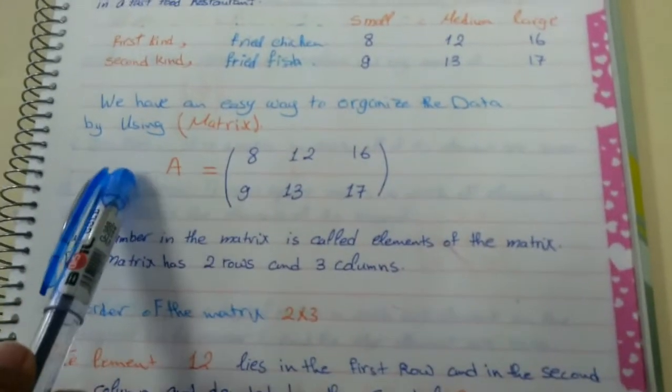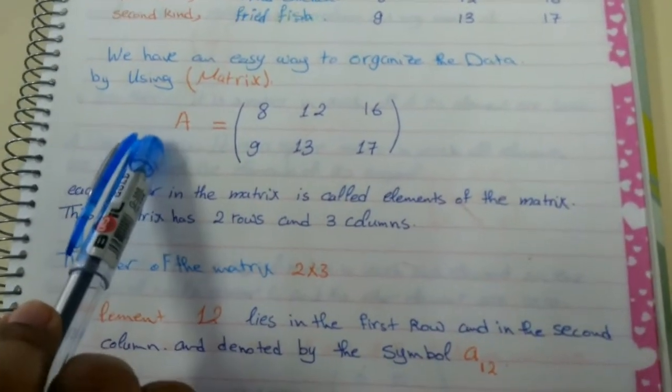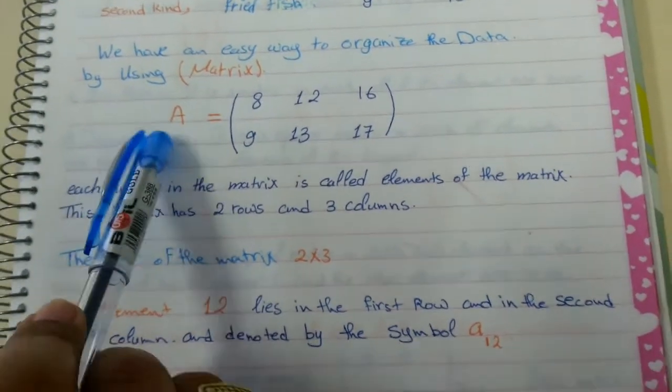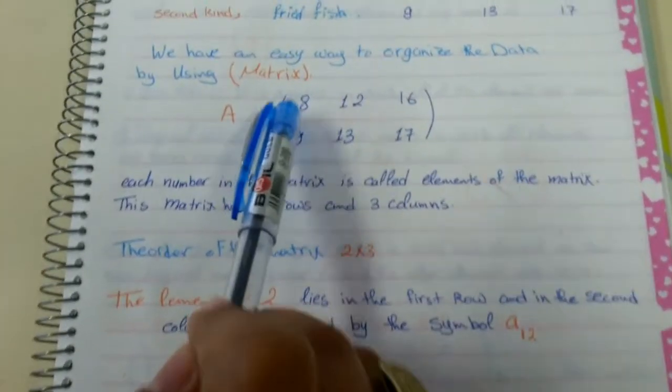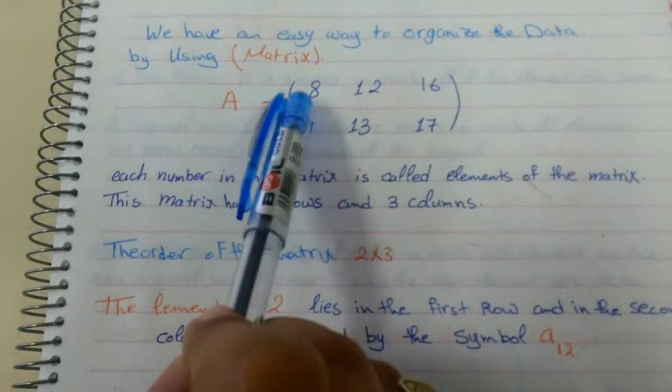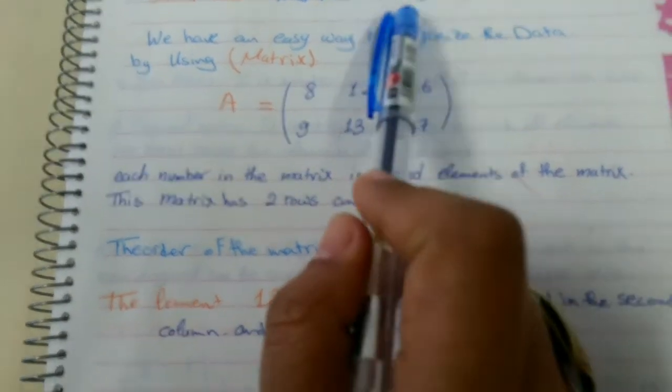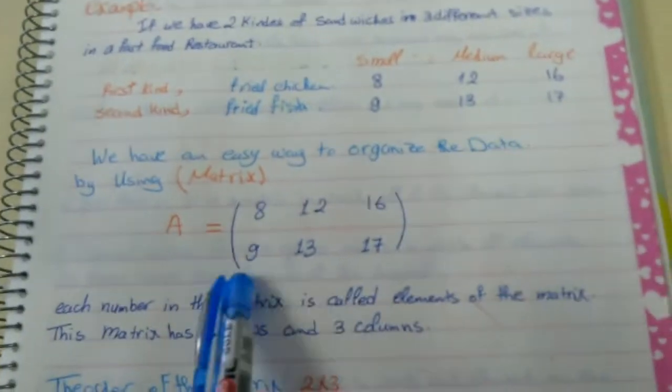First, we have to write the letter or the name of the matrix in capital letter. Say that the matrix is A and we are going to fill in the sizes 8, 12, 16, 9, 13 and 17 here.